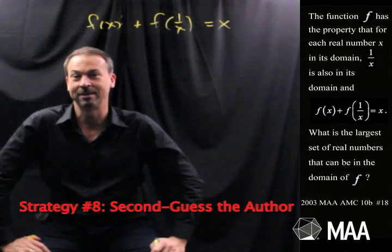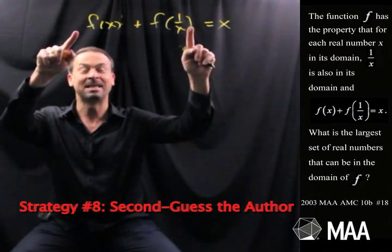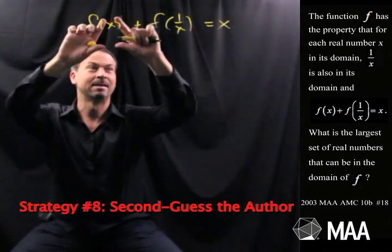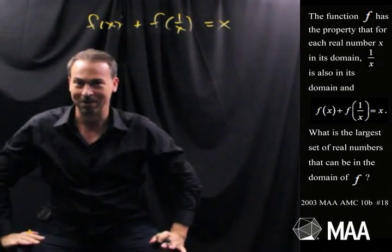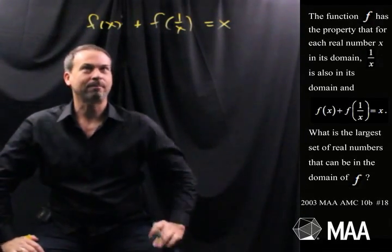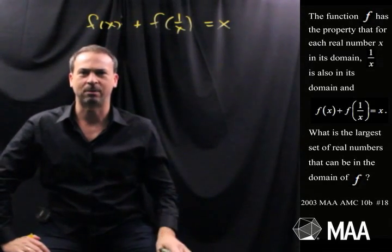I'm going to do strategy number 8, which is to second-guess the author. This probably isn't coming out of nowhere. I bet the author thought of something very clever that this structure is very helpful. Alright, so I'm going to embrace the strangeness of this question and just try to do something. f of x plus f of 1 over x equals x.